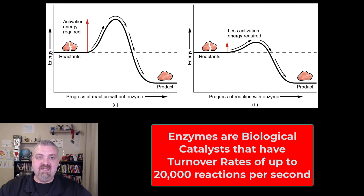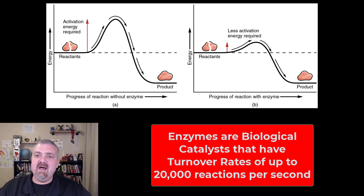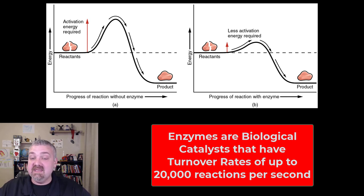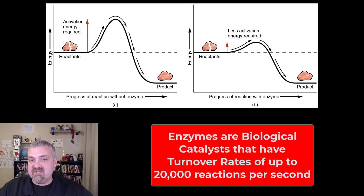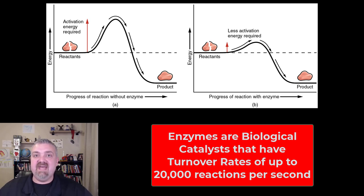So the key things we've noted: enzymes are protein, they have the -ase ending, they work by lowering activation energy — the most common thing you'll hear — they have turnover rates of up to 20,000 reactions per second, they speed up chemical reactions up to a billion times faster, and as biological catalysts they allow us to do all this without destroying us or damaging homeostasis.